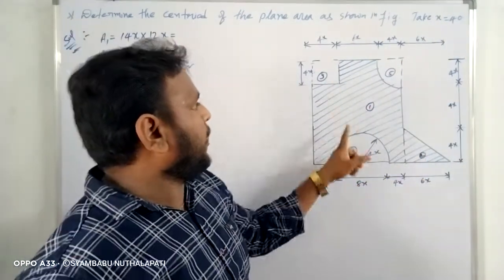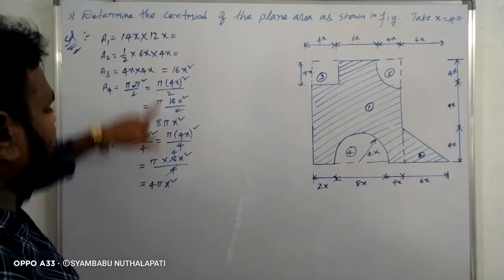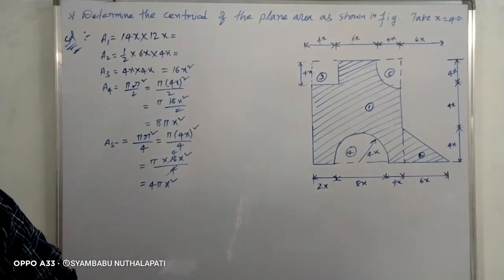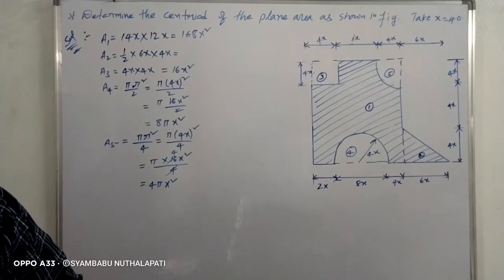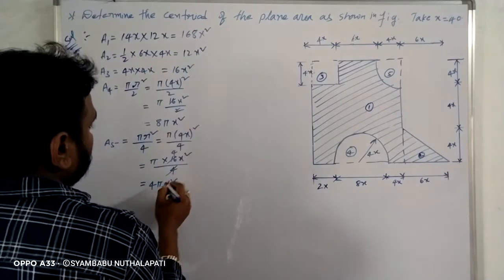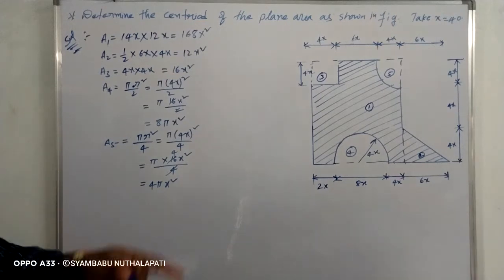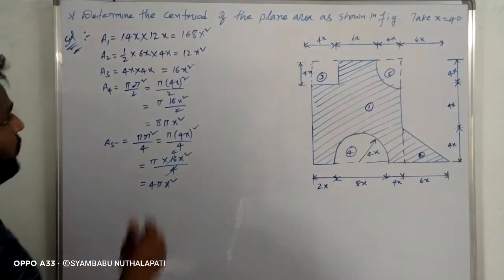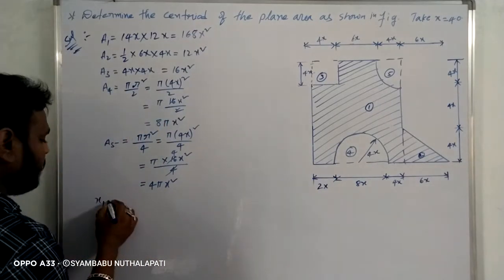The five areas are A1, A2, A3, A4, A5. Total area A1 is 168x squared. A2 is 12x squared. A3 is 16x squared. A4 is 8 pi x squared. A5 is also 16x squared. Finding each area individually makes the calculation easier.